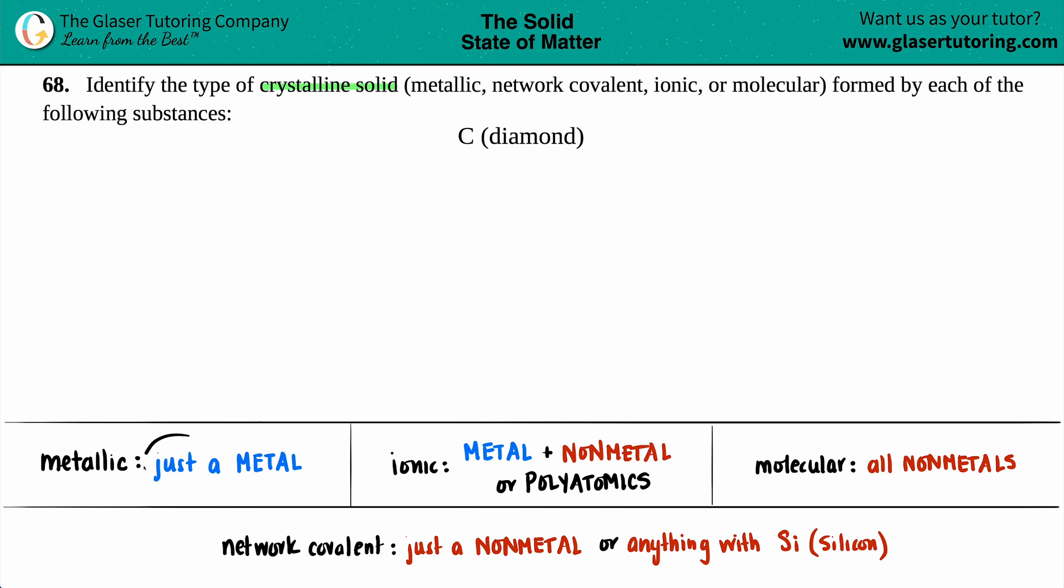First one up is metallic. Now metallic crystalline solids just come from a single metal. The word metal is in the word metallic, so I'm looking for a metal here, and a single one. I have a single atom, carbon, but if I look on the periodic table, carbon is a non-metal. So it wouldn't really be a metallic crystalline solid because I have a non-metal and not a metal.